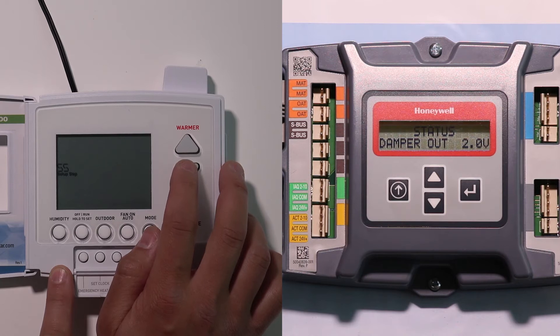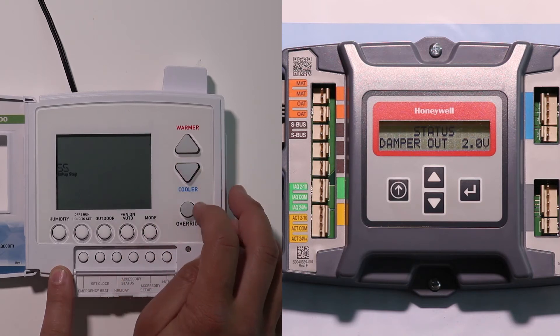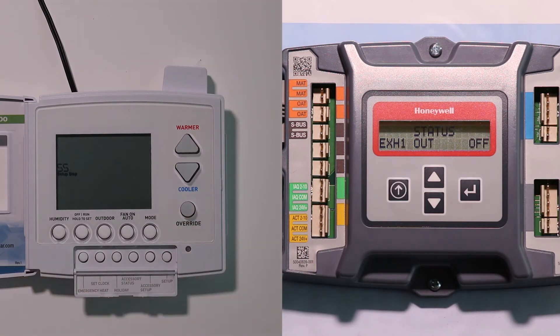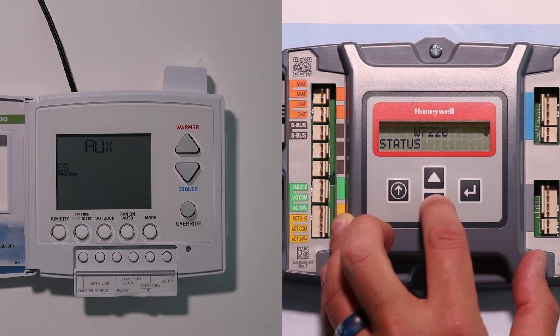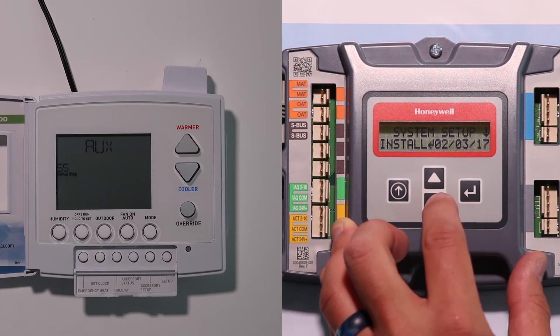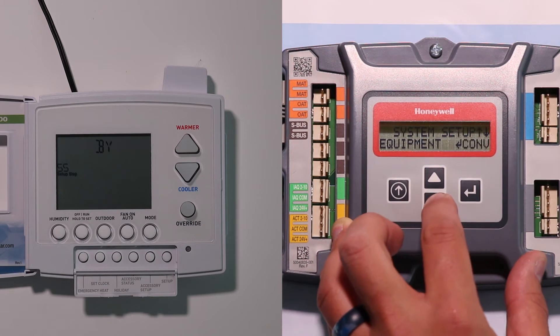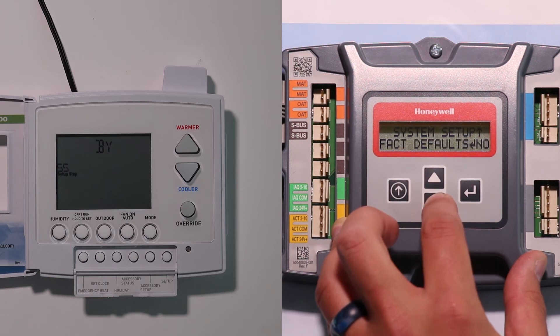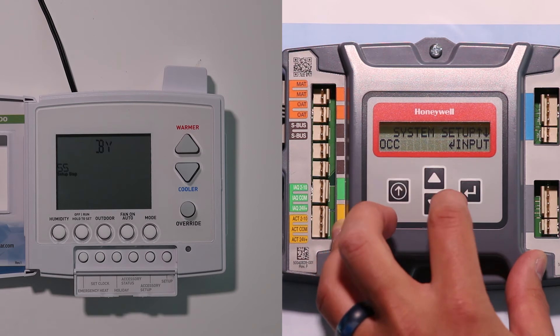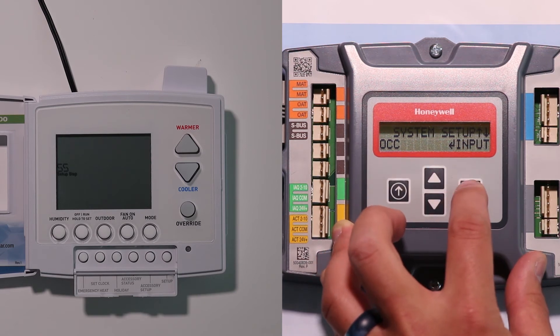Then over on our economizer controller, we need to tell him to accept this signal. So the way we're going to do that is we're going to go through this guy and go to the system setup mode, hit enter, and we're going to scroll down until we get to OCC. So on that one, our choices are input or always, and we want to have him set up for input on there.